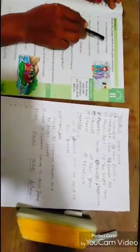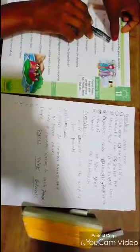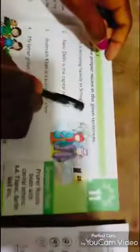It is snowing heavily in Srinagar. In this sentence, you can see that Srinagar has a capital S. So, this is the proper noun. So, you have to circle it. I have to write it here. You have to circle it and match it.